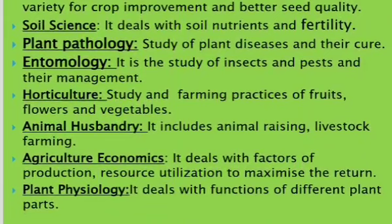Let's discuss all of them. Agronomy deals with the management of field crops — for example, wheat and rice. In agronomy, we study how to produce a crop, how to cultivate the soil, how to tend the crop, and how to plan accordingly. Plant breeding deals with the use of genetics and crop variety for crop improvement and better seed quality.